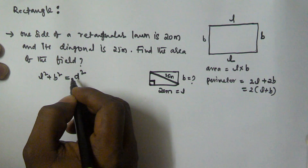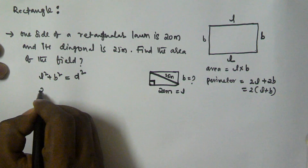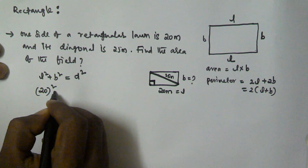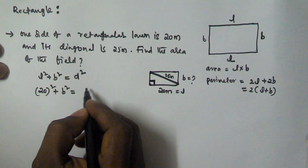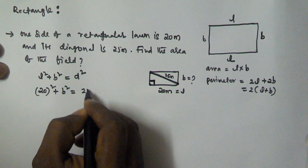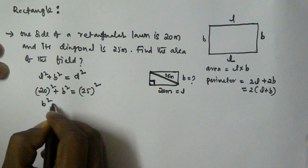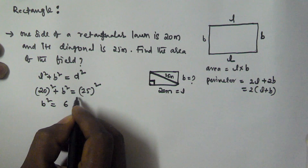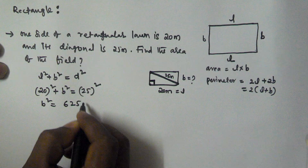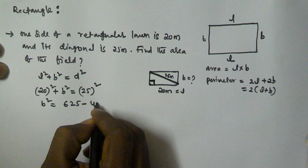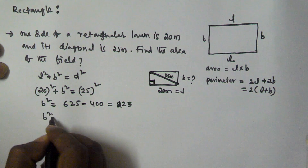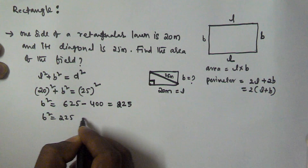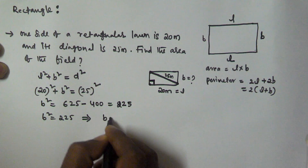Length squared plus breadth squared equals diagonal squared. Length is 20, so 20 squared plus B squared equals 25 squared. So B squared equals 25 squared minus 20 squared, that is 625 minus 400, which equals 225. So B squared equals 225, and B is going to be 15.